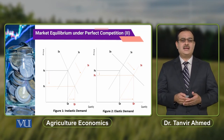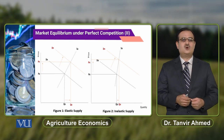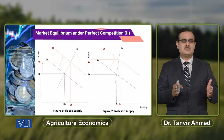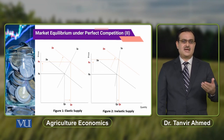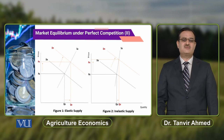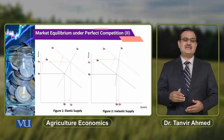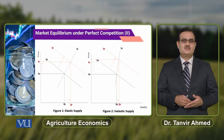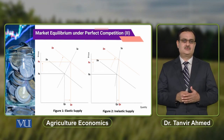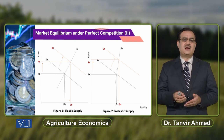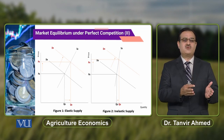Now replicating this by considering two different types of supply curves — one elastic and one inelastic — if we compare the supply curves, in Figure 1 supply is elastic compared to the supply curve in Figure 2. Again, there is an increase in demand, and the demand curve shifts from D0 to DN. Because of that shift in the demand curve, you can observe that along the inelastic supply curve, the increase in price is greater than the increase in equilibrium price observable along the elastic supply curve.